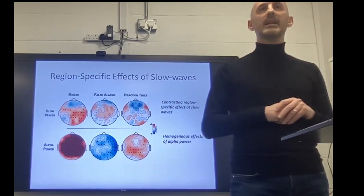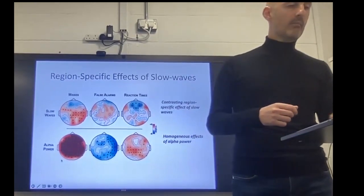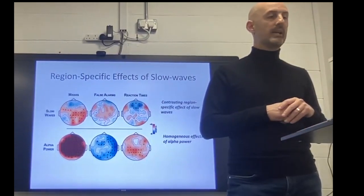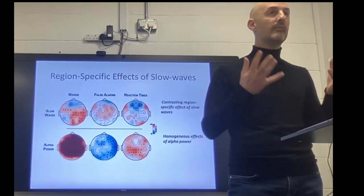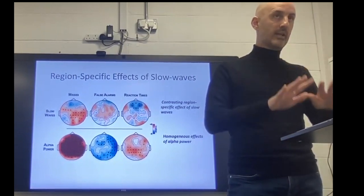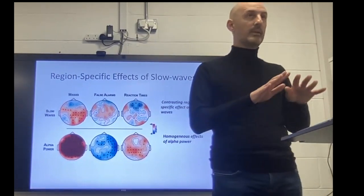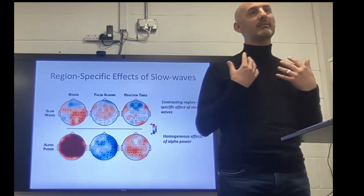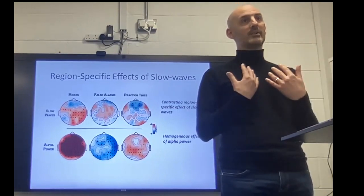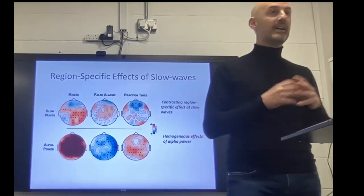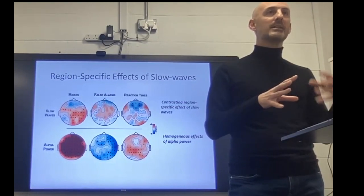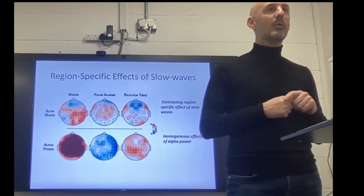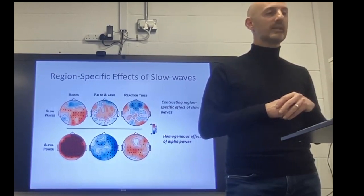Comparing this to alpha activity: alpha tends to have a more homogenous effect. Alpha is positively correlated with misses and reaction times, and negatively correlated with false alarms — more alpha, more misses, slower response times. As we suppress alpha, we generally see better performance, but occasionally get trigger-happy responding. Alpha is more about the engagement and withdrawal of visual attention generally. Whereas slow waves offer something more intriguing in terms of these region-specific effects, seeming to knock out specific networks depending on which processes are engaged.